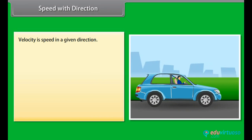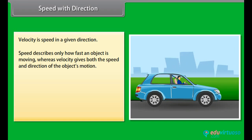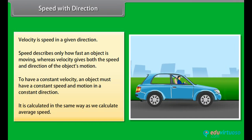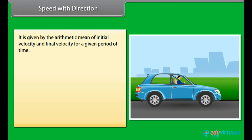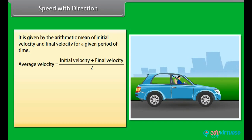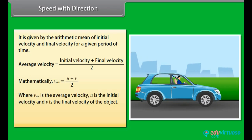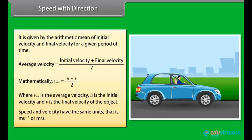Speed with direction. Velocity is speed in a given direction. Speed describes only how fast an object is moving, whereas velocity gives both the speed and direction of the object's motion. To have a constant velocity, an object must have a constant speed and motion in a constant direction. Average velocity is calculated as the arithmetic mean of initial velocity and final velocity: average velocity = (U + V) / 2, where V_av is the average velocity, U is the initial velocity, and V is the final velocity. Speed and velocity have the same units — meter per second.